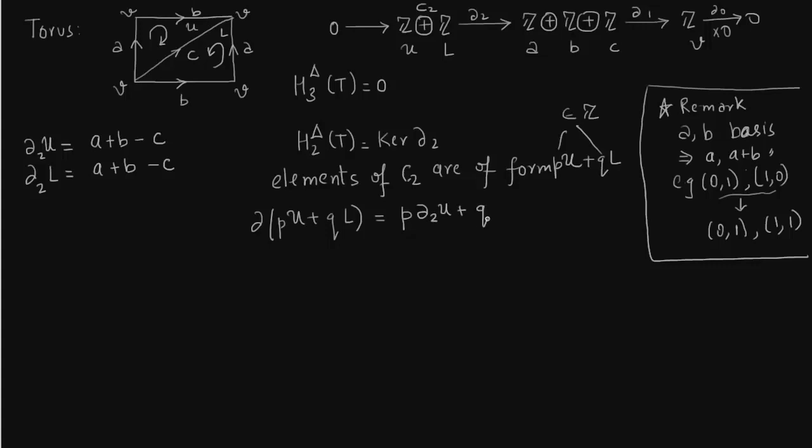So p + q - the integer factors out. This will be (p+q) times (a+b-c), because delta_2(U) and delta_2(L) are both a + b - c.